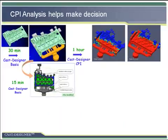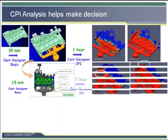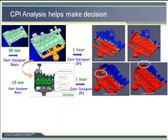As the second simulation result showed, the air entrapment of the right inner gate was improved. But the air in the left inner gate was still there, and it seemed we needed to add another overflow to the left side but at a different location.